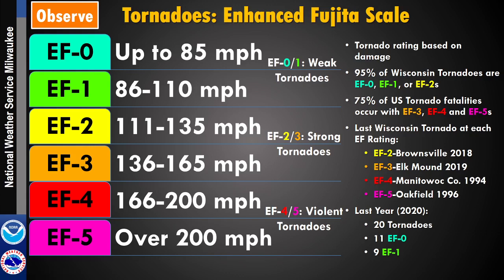Tornadoes are rated by the damage they do, from 0 to 5 on the Fujita scale. A number of years ago it got reworked with wind speeds based on damage, and it's now called the Enhanced Fujita scale. Most common tornadoes are the EF0s and EF1s, and thankfully there aren't a lot of fatalities with those. However, we have seen fatalities from EF1 level tornadoes with mobile home parks and manufactured housing, so even weaker tornadoes can cause injuries and fatalities.